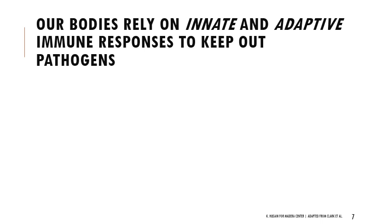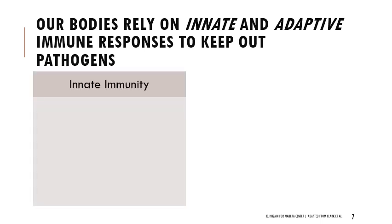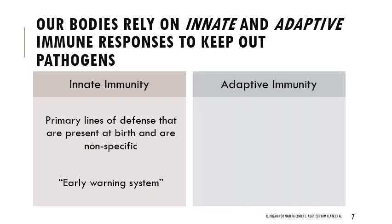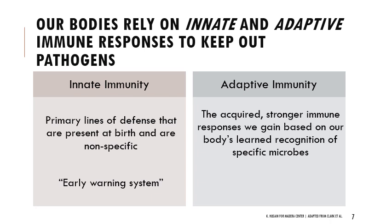Our body relies on both innate and adaptive immune responses to keep out pathogens. By innate we mean what we're born with — no specific targeting of particular bacteria or viruses; these are non-specific primary lines of defense present at birth, like your skin. Adaptive immunity, as the name suggests, is our body adapting to foreign invaders — learning from them and growing stronger. These are acquired, stronger immune responses based on recognizing specific microbes; this is the memory component of immunity.